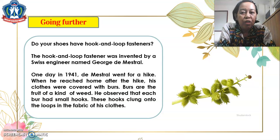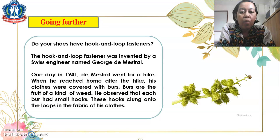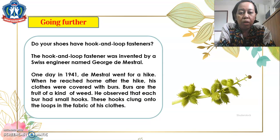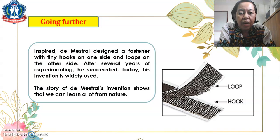In 'Going Further' — do your shoes have hook-and-loop fasteners? The hook-and-loop fastener was invented by a Swiss engineer named George de Mestral. One day in 1941, de Mestral went for a hike. When he reached home, his clothes were covered with burrs — the fruit of a kind of plant. He observed that each burr had small hooks that clung onto the loops in the fabric of his clothes. Inspired by this, de Mestral designed a fastener with tiny hooks on one side and loops on the other. After several years of experimenting, he succeeded. Today his invention is widely used, showing that we can learn a lot from nature.